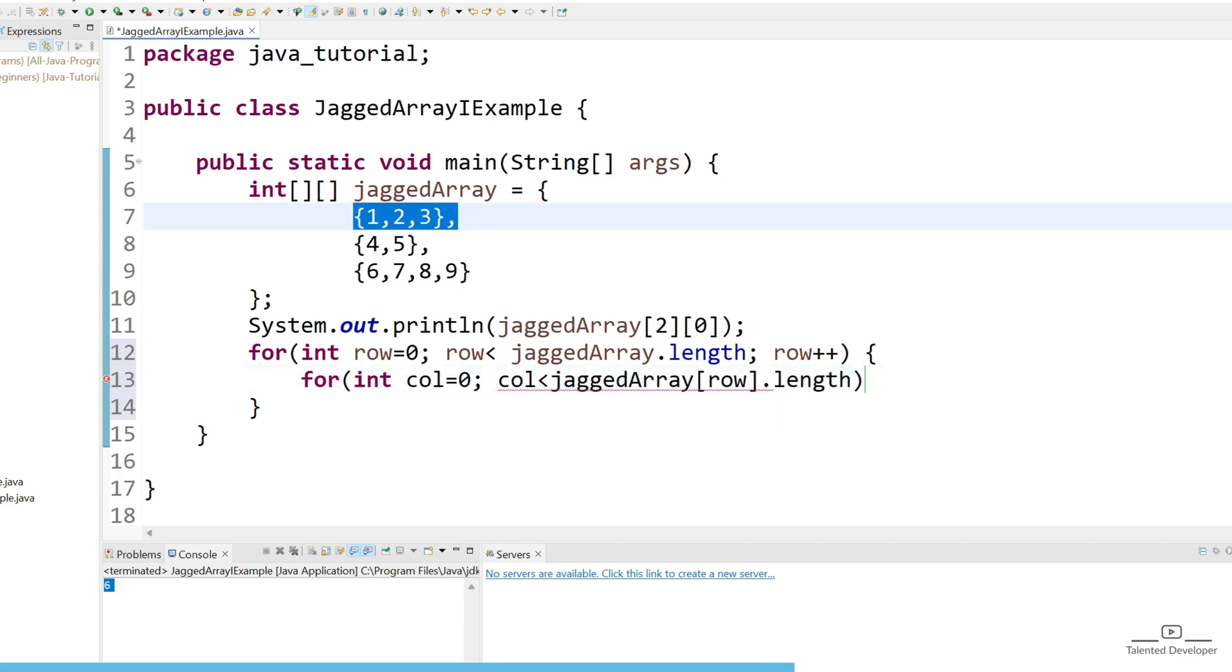At the first time it will be jaggedArray[0], so we'll get this data, then length—1, 2, 3—we'll get the length as 3. Then col++, and just use System.out to print jaggedArray[row][col].